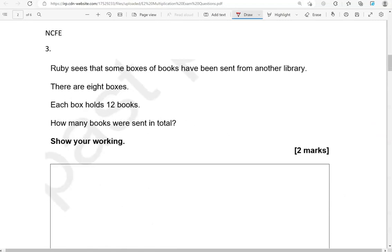Ruby sees that some boxes of books have been sent from another library. So Ruby works in a library. There are 8 boxes. Each box holds 12 books. How many books were sent in total? Show your working. So we're doing 8 times 12.